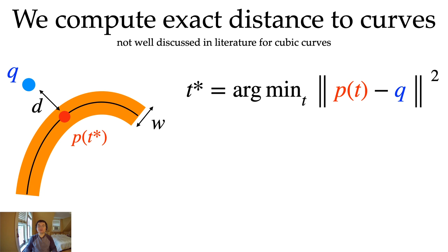Instead, we need to compute exact distance to curve without approximation. This operation is not very well discussed in the literature for cubic curves. To compute the exact distance between the point q and the curve p, we want to find the closest point p of t* such that the square of the L2 distance is minimized. So this is a 1D optimization problem.